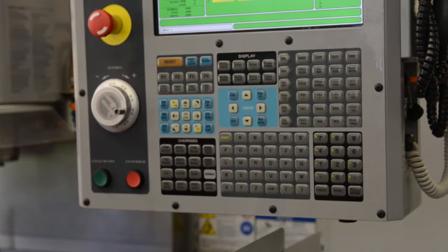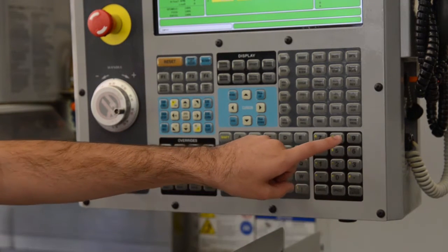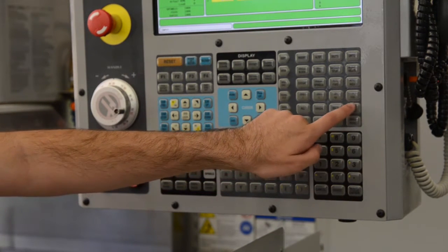Once the machine has established its home position, you can press the home G28 button and it'll find its home location.